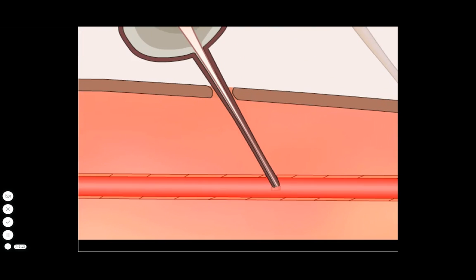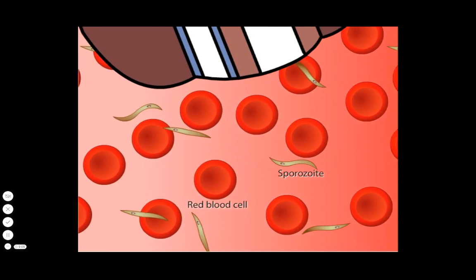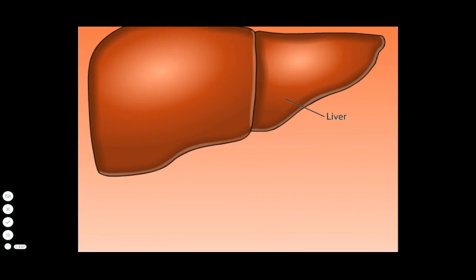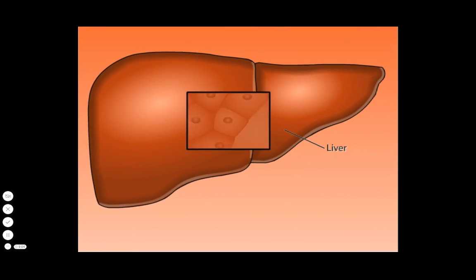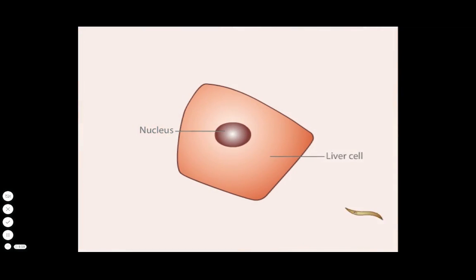The circulatory system delivers the sporozoites to their target, the liver. A sporozoite enters a liver cell and begins to feed and grow. During the process,